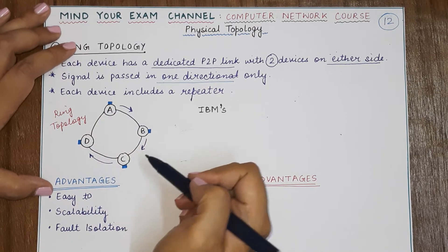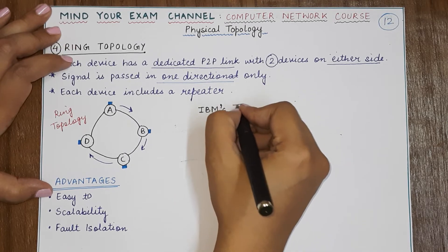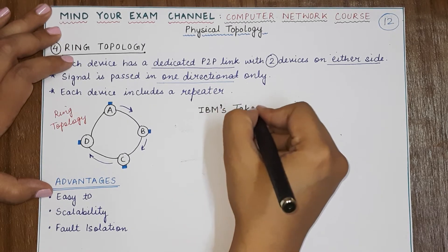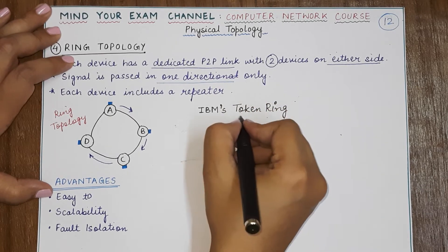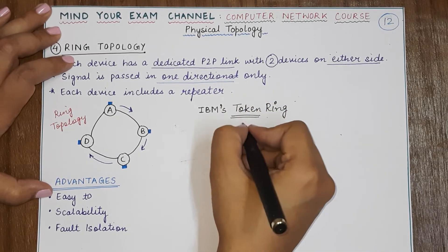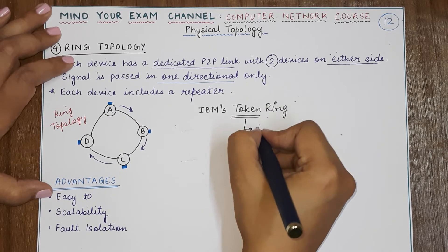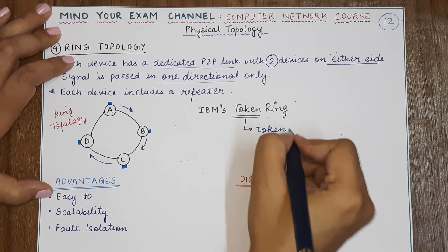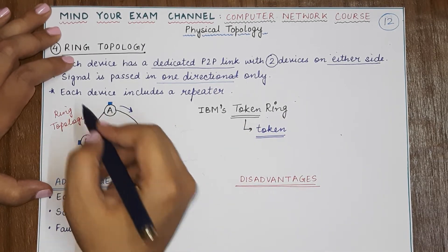Okay, now an example of the ring topology is IBM's local area network known as token ring. Now as you can judge from the name, the token ring basically involves the usage of tokens. Tokens basically govern who is going to transmit the data.